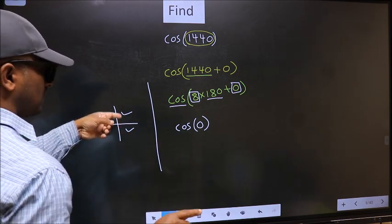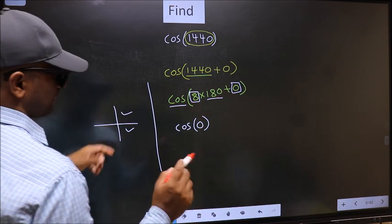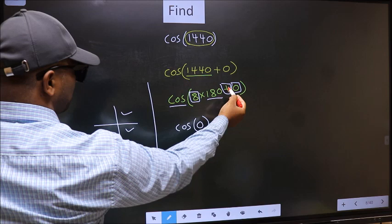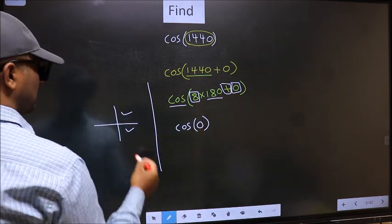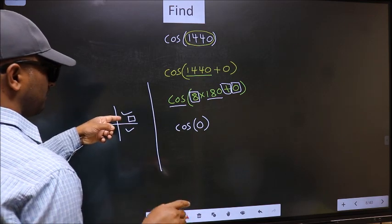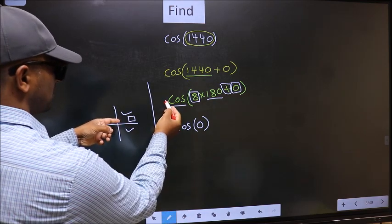So now to select the quadrant we should look at this symbol. Here we have plus, that means angle lies in the first quadrant and in the first quadrant cos is positive.